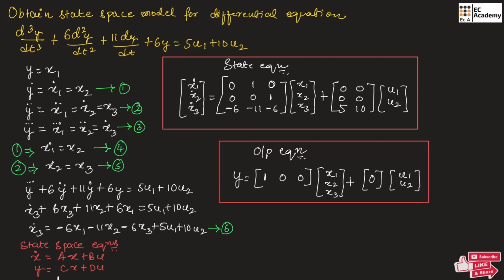Now let us write the output equation in matrix form: y equals C times x plus D times u. Since y equals x1, the x2 and x3 coefficients are 0, giving C matrix row [1, 0, 0] multiplied by [x1, x2, x3]. There are no u1 or u2 terms, so the D matrix is [0, 0]. This is the output equation in matrix form, completing the state space model for the differential equation. I hope you have understood the topic. Thank you.